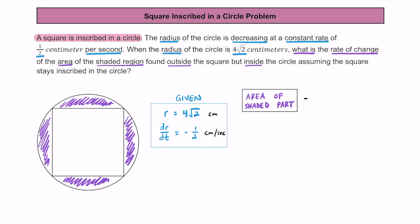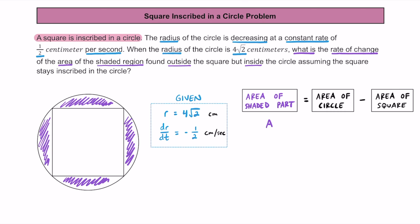To find the area of the shaded part, we take the area of the circle and subtract the area of the square. I'll use capital A for the shaded area: A equals pi r squared minus a squared. The circle's area is πr², and the square's area is a², since both sides of a square are equal.